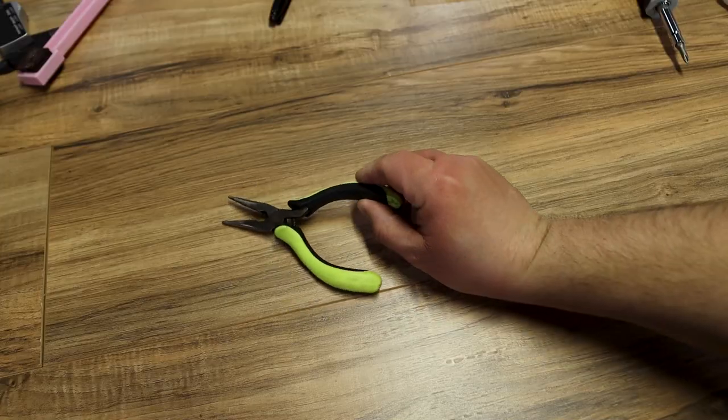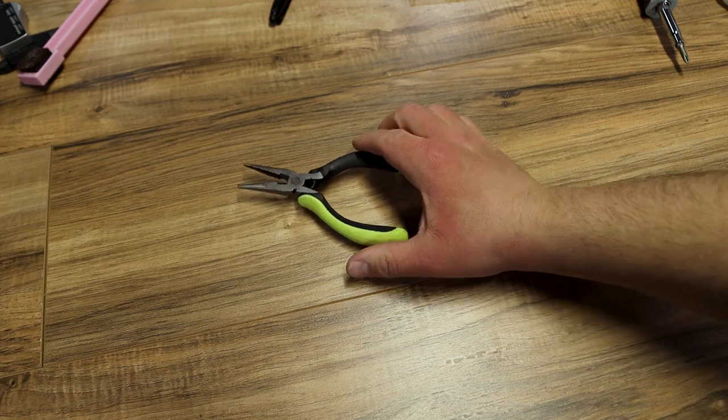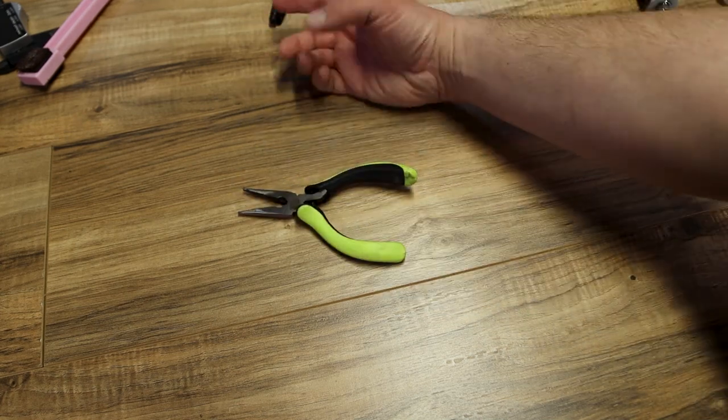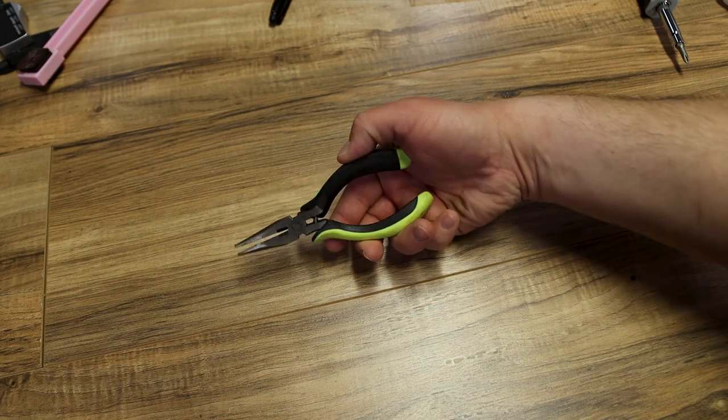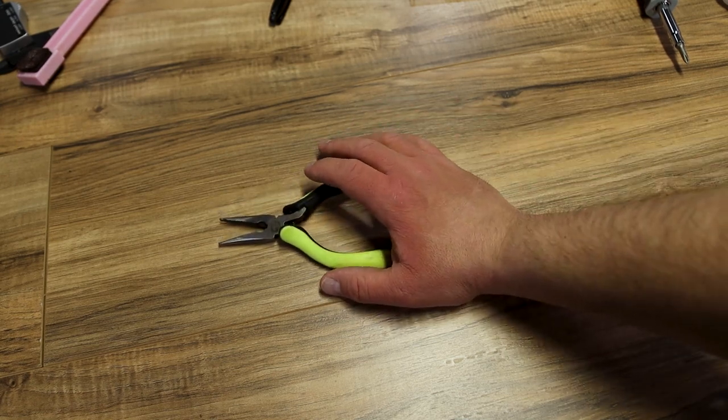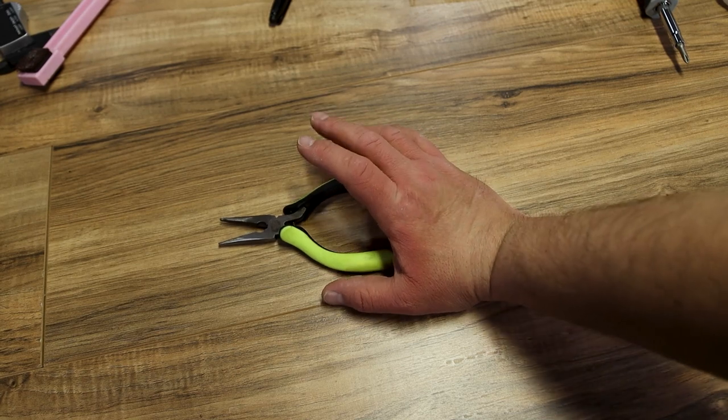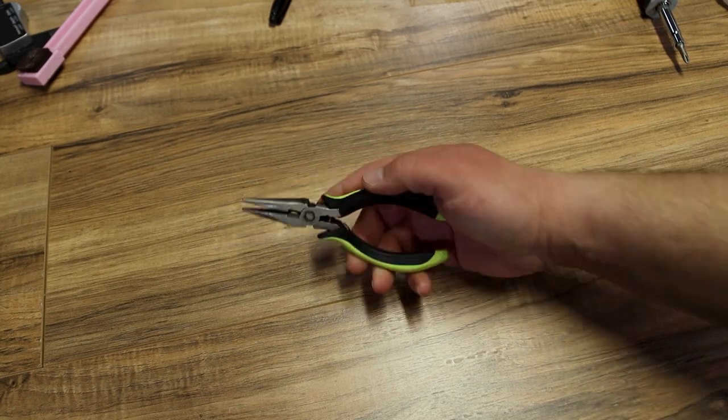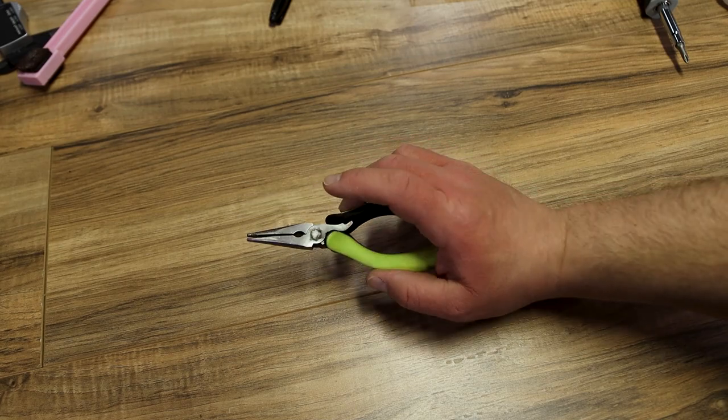Next on my list is a needle nose pliers. It can be a little one like this. It can be a larger one with a longer nose. Whatever you want but I really like the needle nose pliers. If you have one laying around, awesome. It's not something you might need right away but you probably will find this useful going forward. A good set of needle nose pliers.